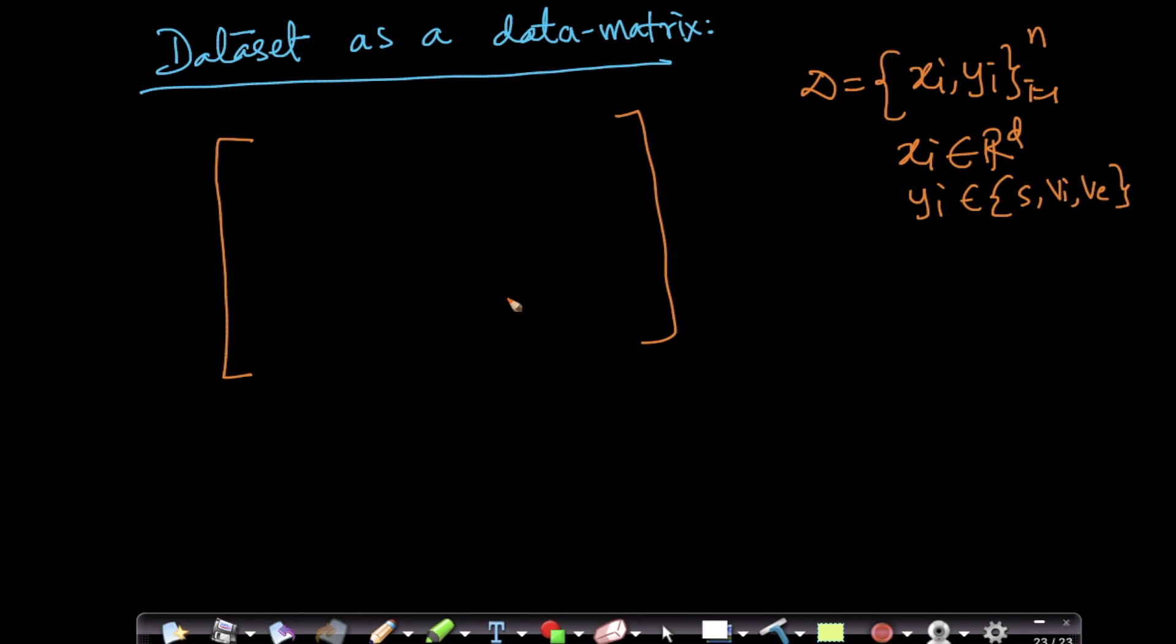There are two ways of representing it as a data matrix. I will pick one and also show you the other way. So imagine if this is my data matrix. This means that my xi is a d-dimensional vector which means I have d features.